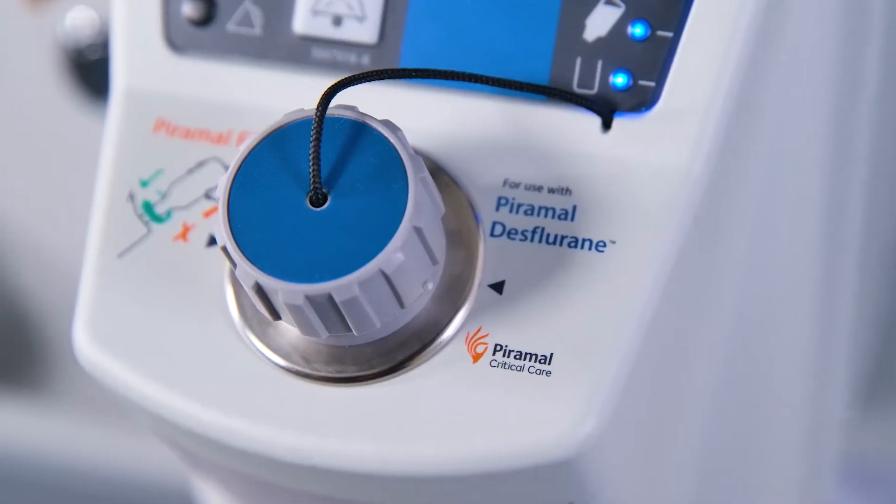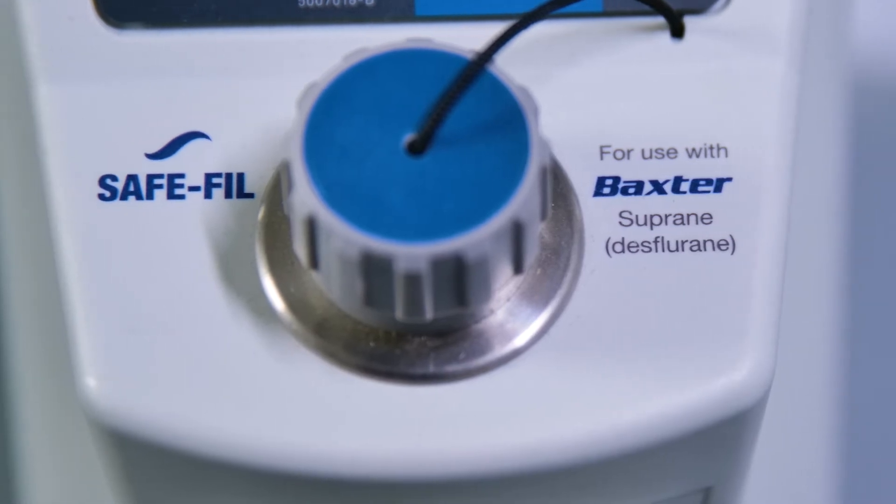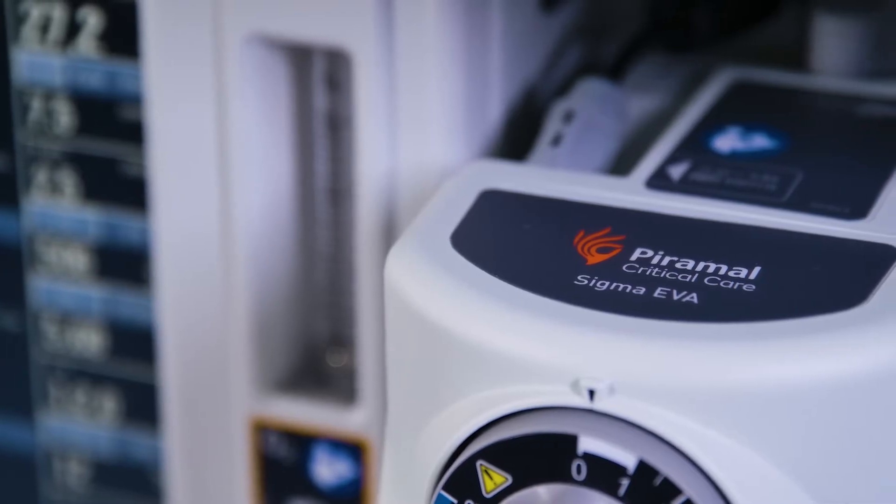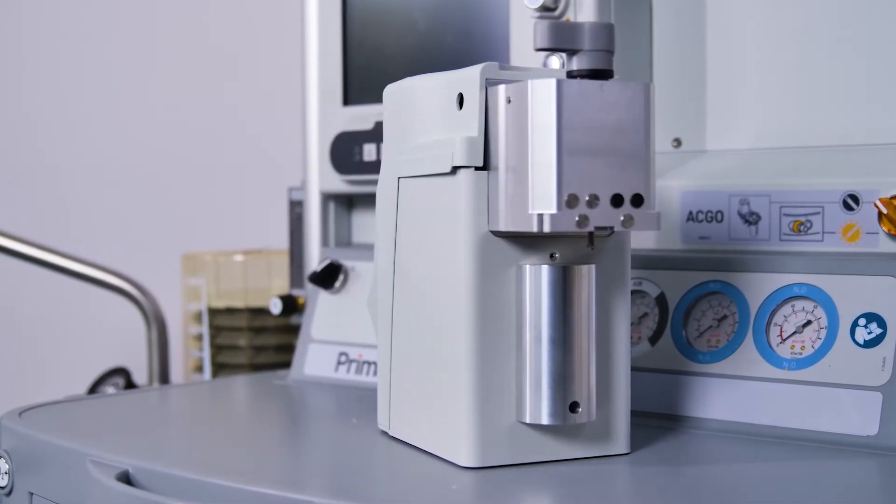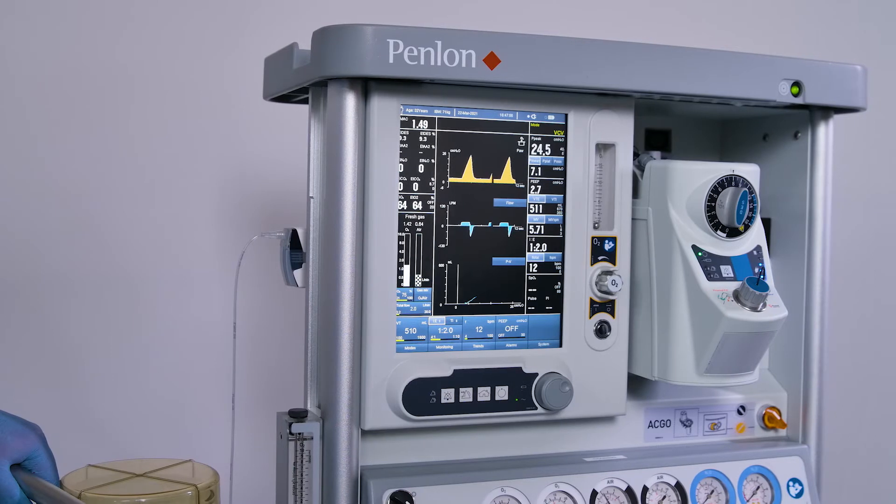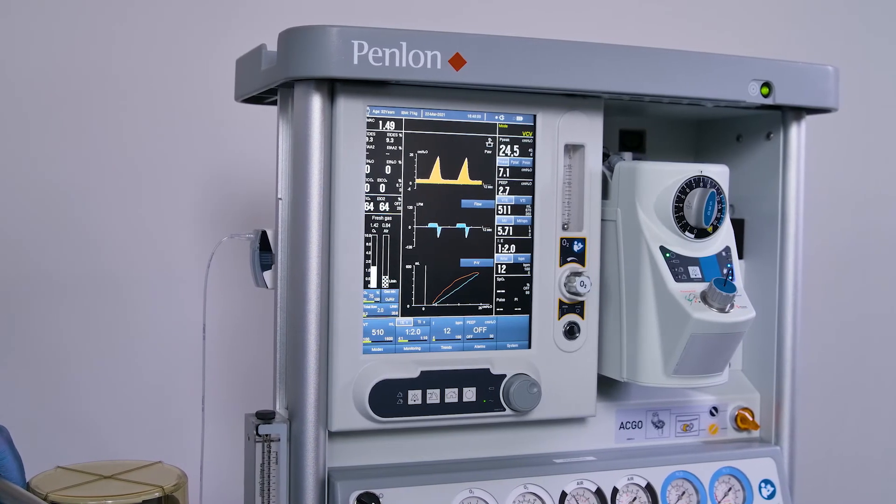The Sigma EVA is available with the Pyramol Fill or Baxter SafeFill filling system. The Sigma EVA vaporizer is available with Selectatec or Draeger Auto Exclusion interlock back bars. The Sigma EVA is a mains-powered electronic vaporizer with battery backup.